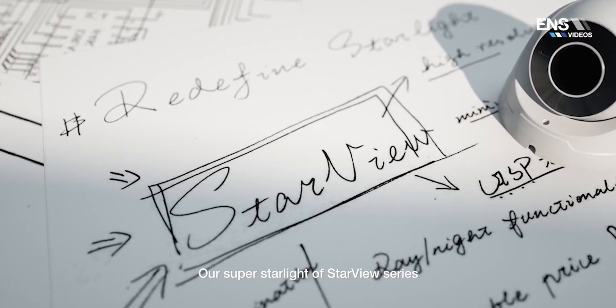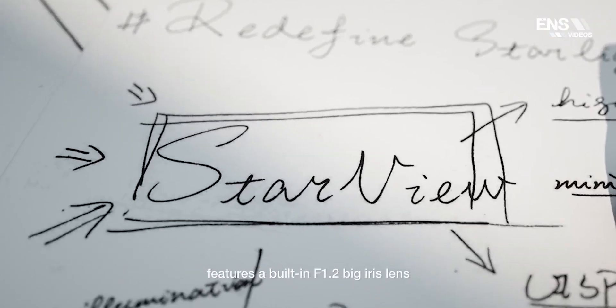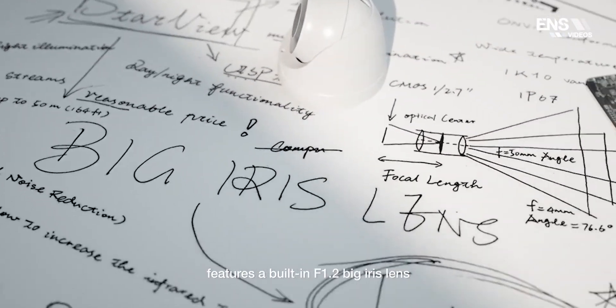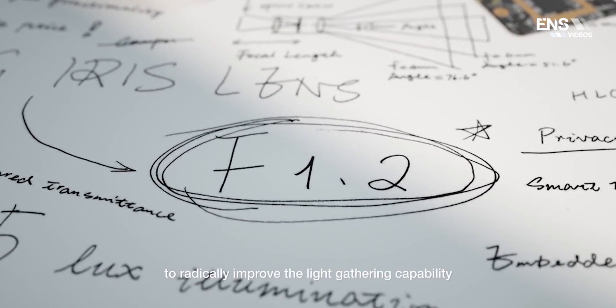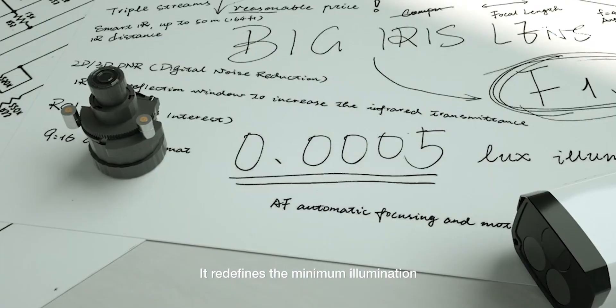Our Super Starlight of StarView series features a built-in f1.2 big iris lens to radically improve the light-gathering capability. It redefines the minimum illumination, which can be down to 0.00005 lux.